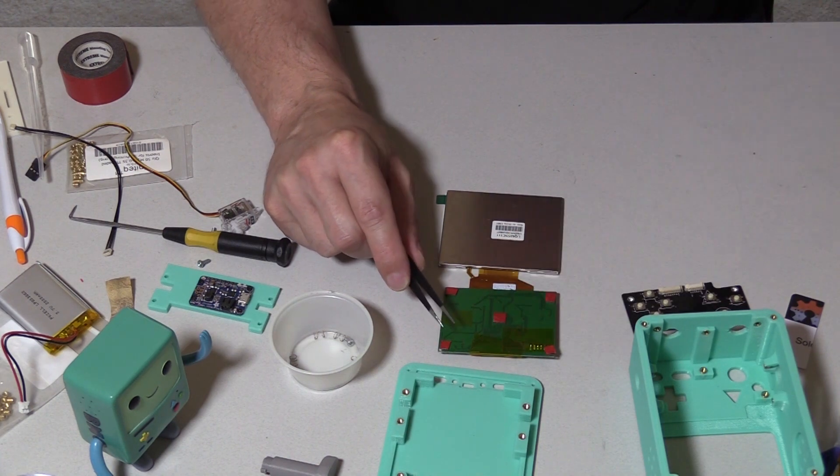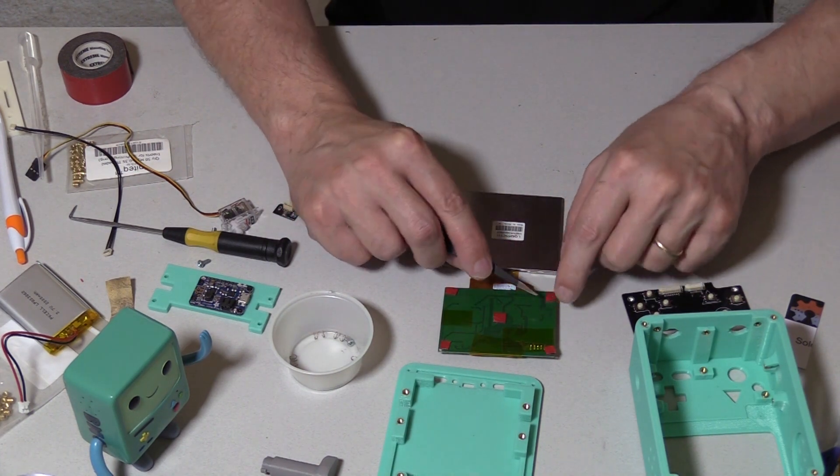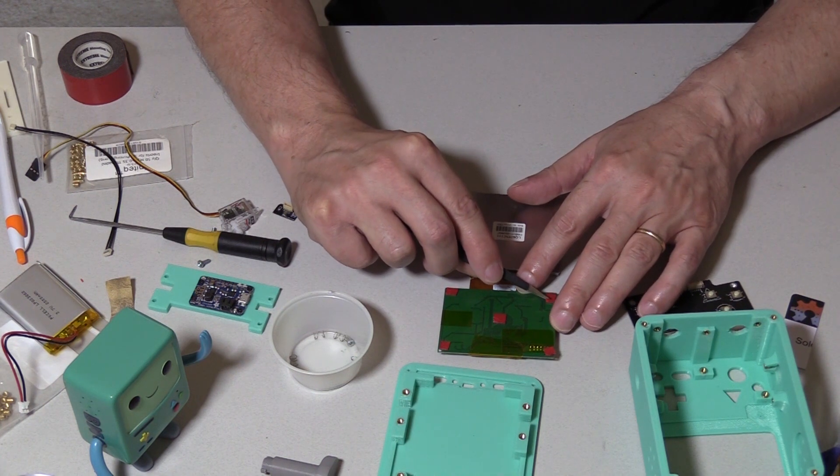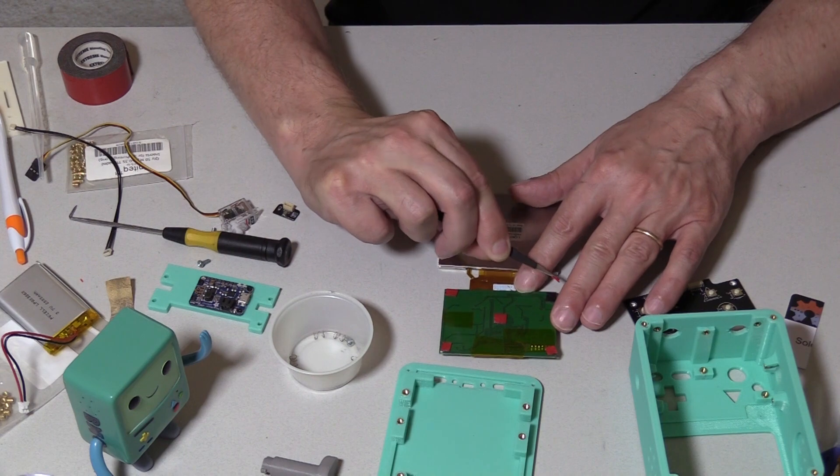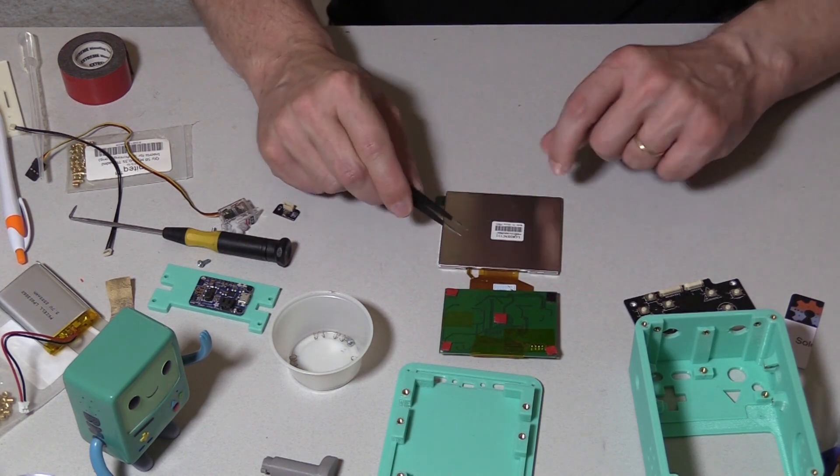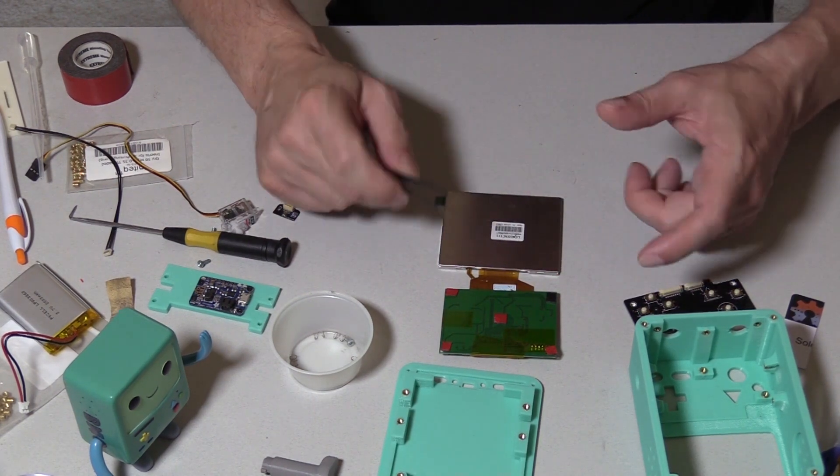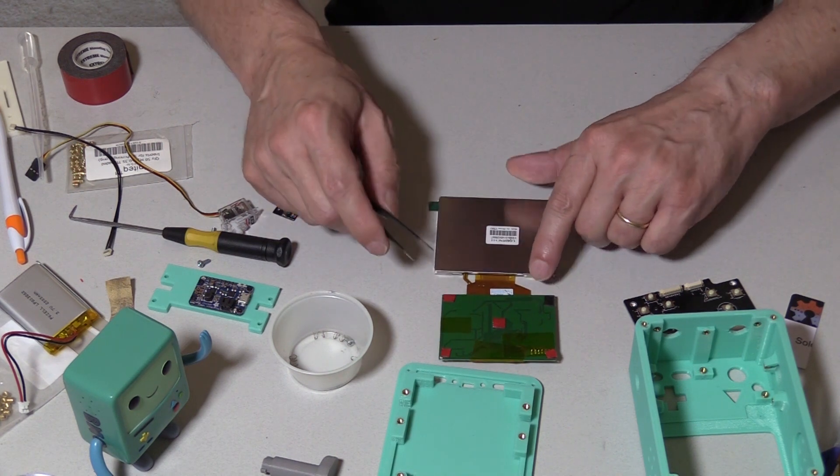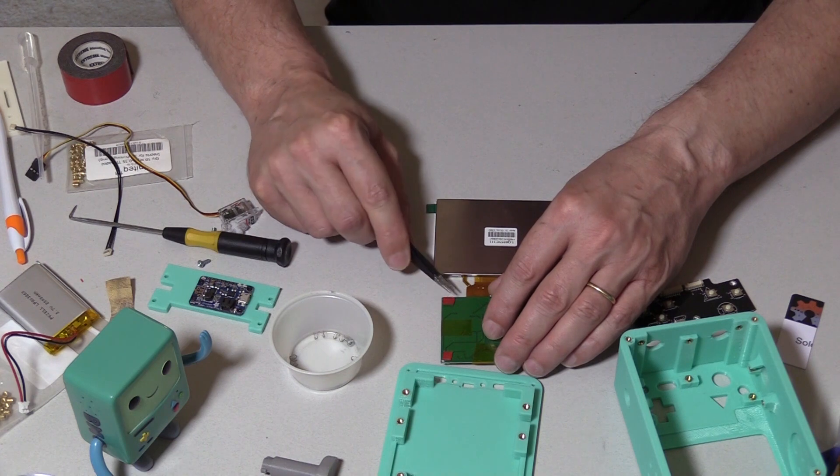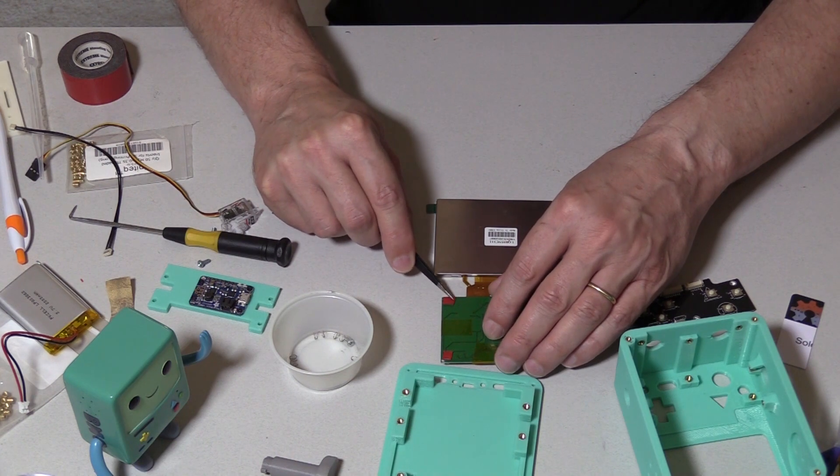And what that will allow me to do is if I ever have to take this thing off, it's not going to stick too much. This red tape will stick, and if you get too much on and you try to remove the board, you can actually separate this metal casing. It's not clamshelled together very well.